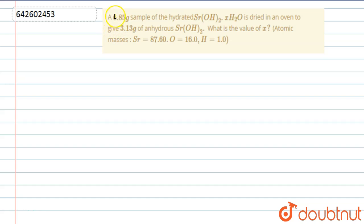Hello everyone, let's start this question. In this question we are given a 6.85 gram sample of the hydrated Sr(OH)₂·xH₂O is dried in an oven to give 3.13 gram of anhydrous Sr(OH)₂. What is the value of x?